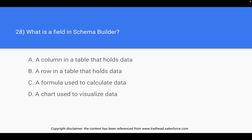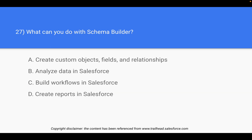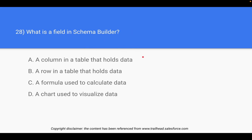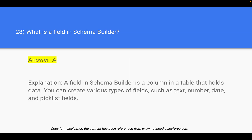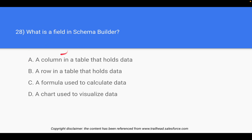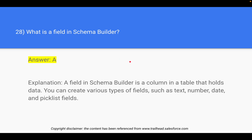Question 28: what is a field in Schema Builder? As mentioned, objects are tables, fields are the columns that reside within a table, and relationships are the way two objects are connected. The answer is option A — a column in a table that holds the data. It can be a text, number, date, or picklist field.